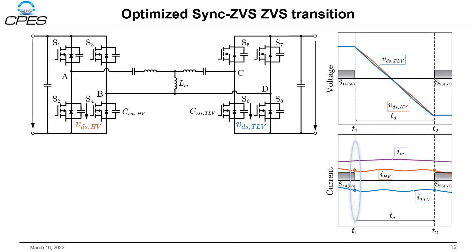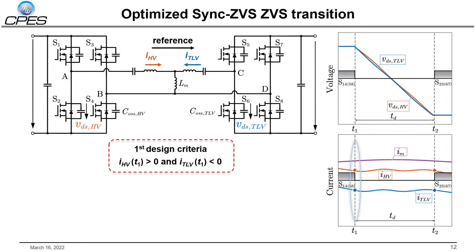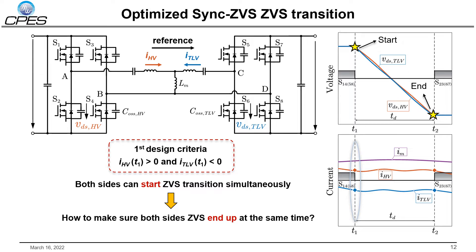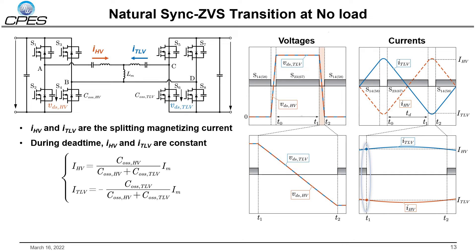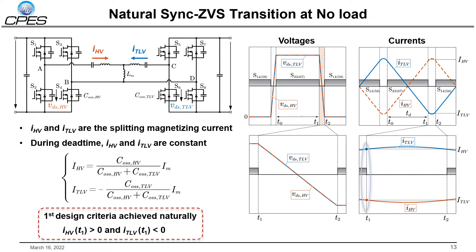Let's go back to the sync ZVS transition. The first design criteria gives the requirement of current direction at T1, ensuring both sides ZVS start at the same time. Consider the zero load situation first. In this case, currents IHV and ITLV become the splitting magnetizing currents dedicated to achieving ZVS at both sides. During dead time T1 to T2, they can be assumed as constant and follow the distribution of device output capacitance. Since IHV is positive and ITLV is negative, the first design criteria is achieved naturally at zero load.